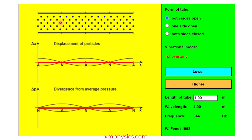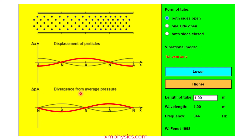A quarter of a period later everybody is back to their equilibrium position and the pressure is back to atmospheric pressure everywhere. Another quarter period later, the displacement-position graph now looks like this — the particles on the left of the node are having a negative displacement, so the air particles on the left are displaced further left, away from the node.